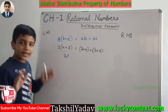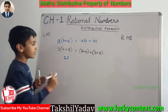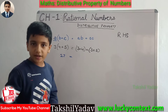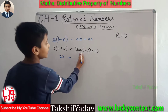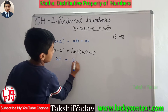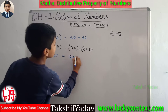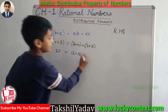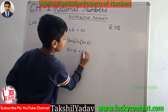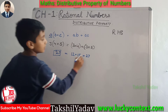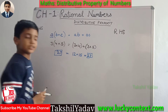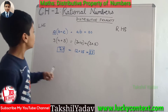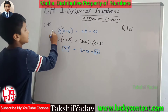On the LHS, we get the result as 27. Now comes the RHS. Here we have 3 into 4, that is 12, plus 3 into 5, that is 15. 12 plus 15 is equal to 27. As we can see, LHS and RHS both have the same results. Thus we can conclude that this formula is correct.